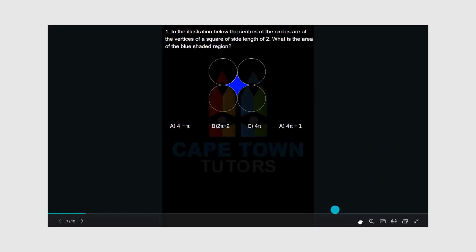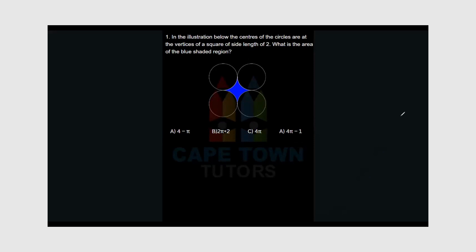This question says that in the illustration below, the centers of the circles are at the vertices of a square of side length 2. What is the area of the blue shaded region? Now the vertices of a square is basically the corners of the square. So if you can just highlight those centers of these circles, you can see here that when we join them, we're going to have a square. So let's actually join them so that you can see this square.